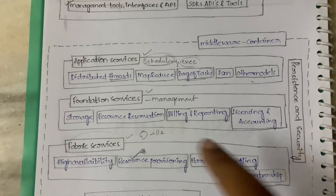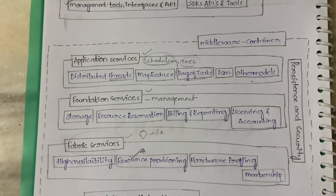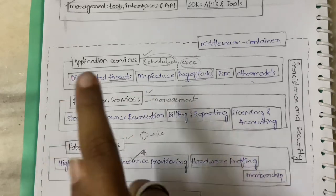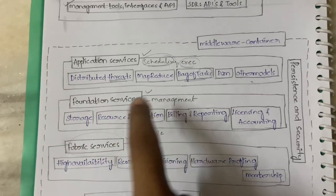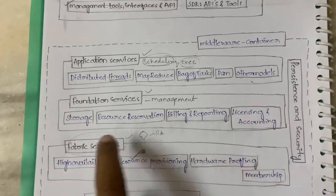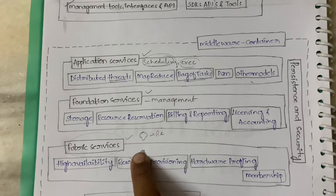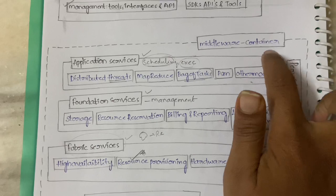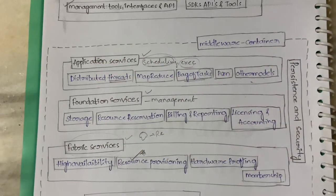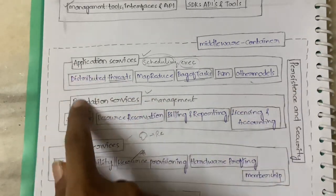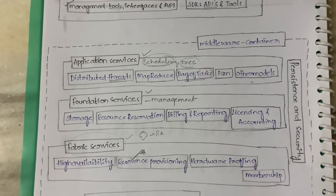The Aneka container has three types of services: Application Services (scheduling and execution), Foundation Services (management related), and Fabric Services (accessing resources in the cloud). Persistence and Security is common to all three services. The Aneka container is essentially the middleware — the foundation of the middleware.